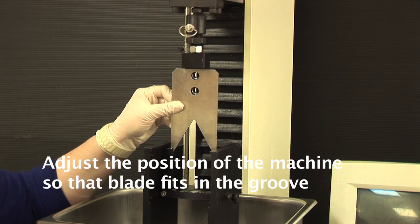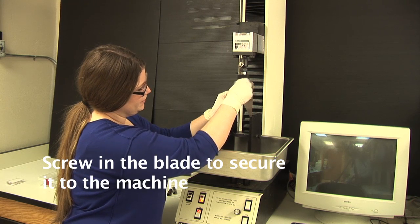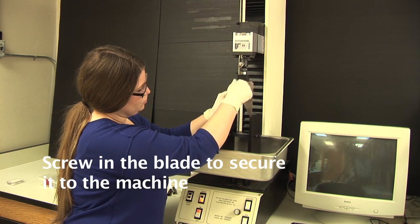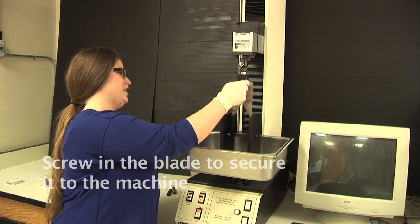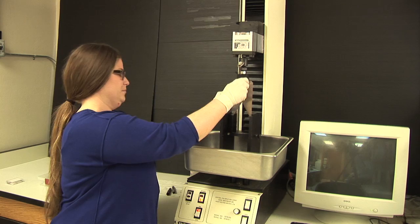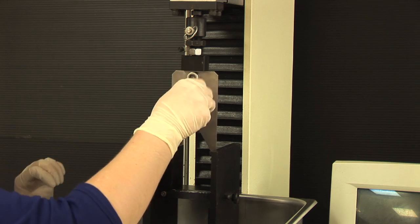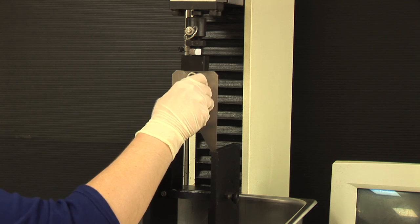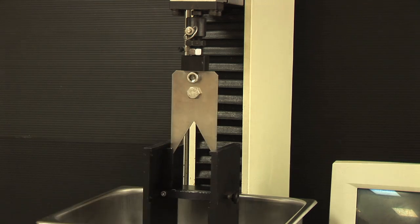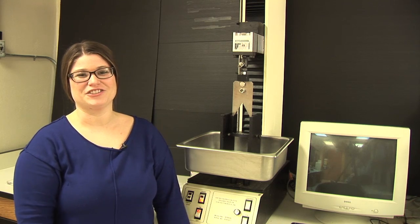So we're going to take these screws and screw them in to the blade and the blade holder to adhere the blade to the machine. And now we have set up the Warner Bratzler Shear Force Machine.